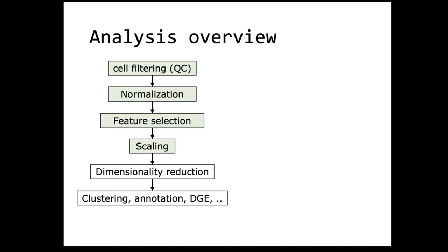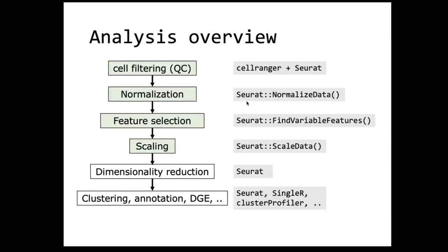After clustering and annotation, you typically do differential gene expression, and then many other things. In this course, the tools we will use are mostly Seurat for most of the steps, including filtering, normalization, feature selection, and scaling. For annotation, we will have a look at SingleR. For differential gene expression, we will use LIMA. And for enrichment analysis, we will be using clusterProfiler. But most of the steps, especially today and tomorrow, will be done in Seurat.